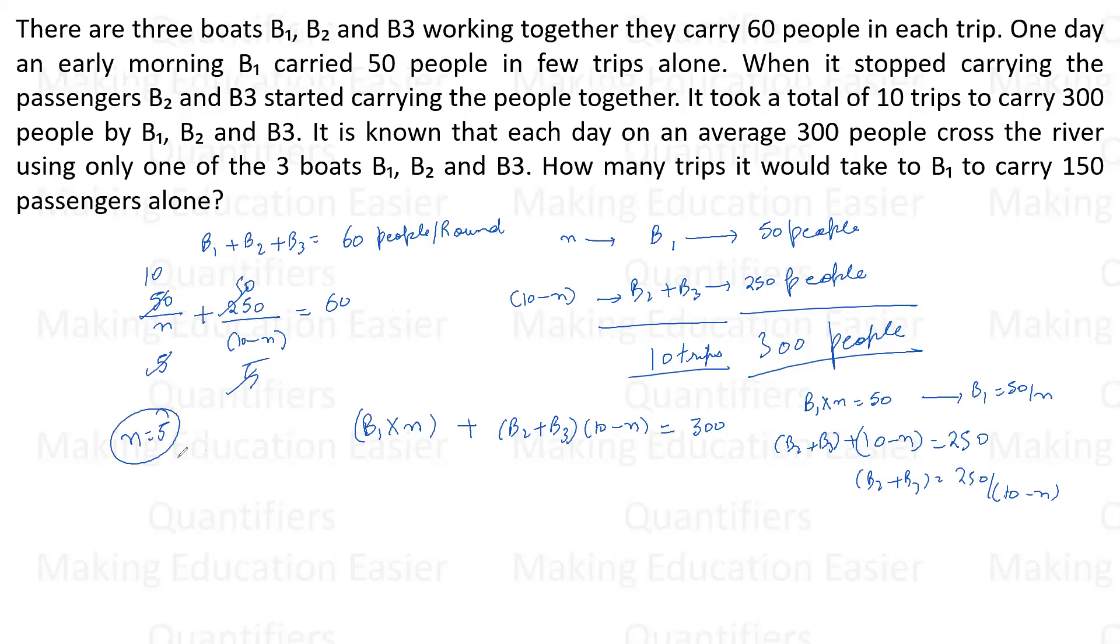So if the value of N is 5, which means B1 is taking 5 rounds in order to carry 50 people. Now if B1 carries 5 rounds in order to carry 50 people, to carry 150 people it will take 15 rounds. Simple as that.